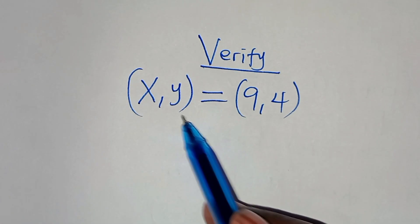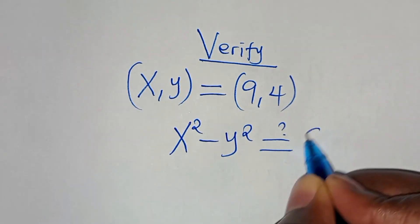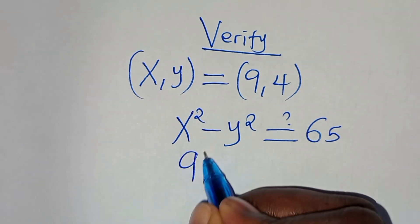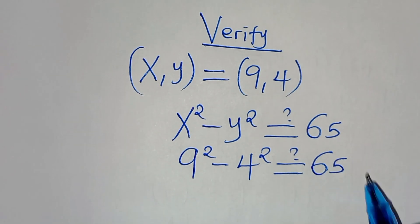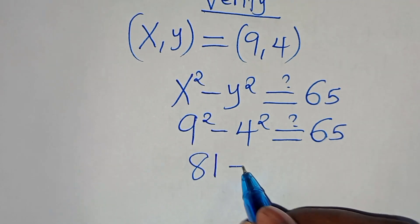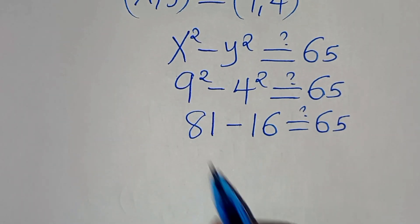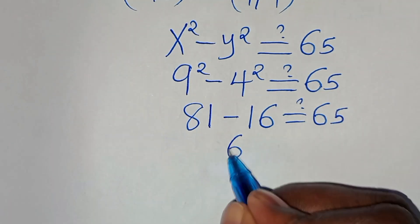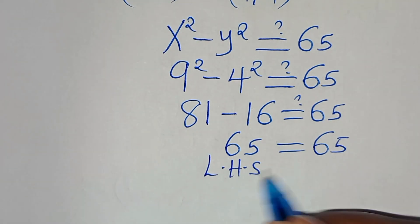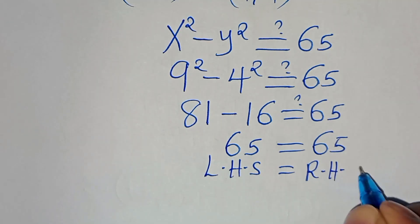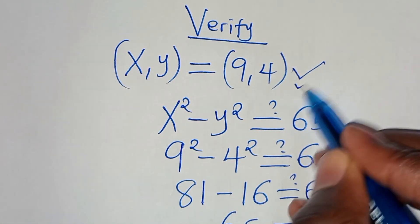Now let's verify x, y = (9, 4). We have x squared minus y squared, which should give 65. So 9 squared minus 4 squared: 9 squared is 81, and 4 squared is 16. So 81 minus 16 equals 65, which confirms the left-hand side equals the right-hand side. This proves that (9, 4) satisfies the equation.